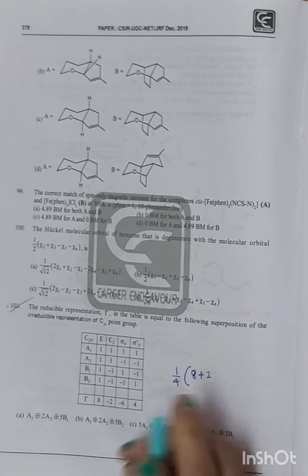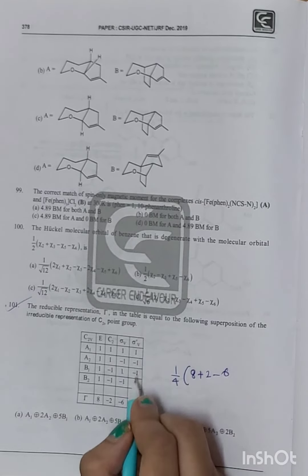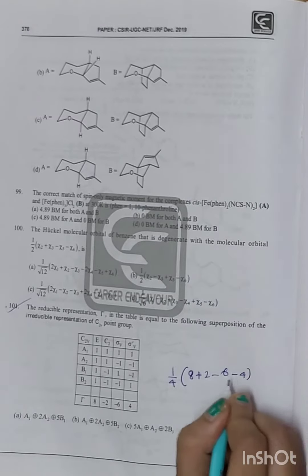1 into 1 into minus 6 is minus 6. After this, minus 1 into minus 1 into 4, minus 4. Okay. So 10 plus 10, this is 0. So it means that B1 is not present.